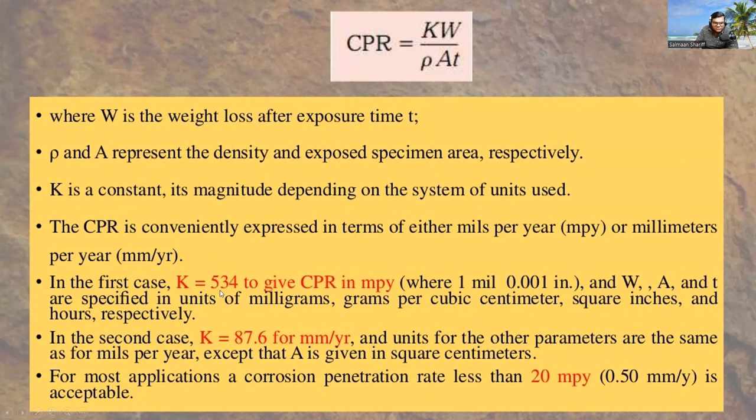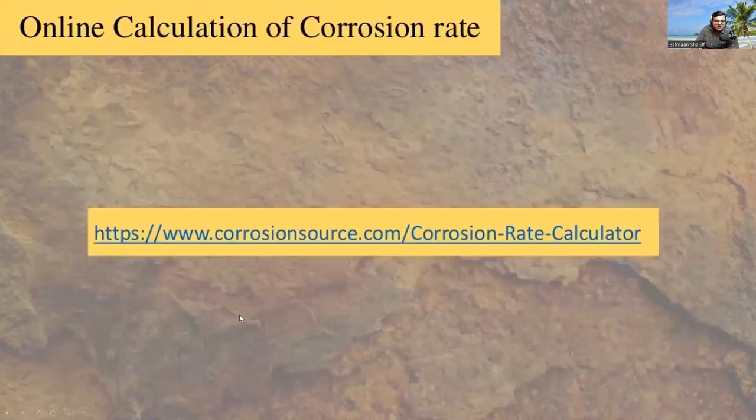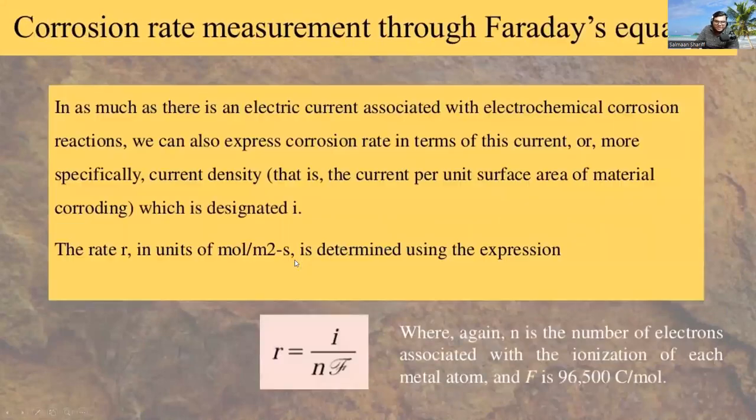In the first case, K equals 534 to give CPR in MPY. In the second case, K equals 87.6 for millimeter per year. The given link is used to find the corrosion rate.